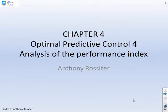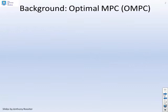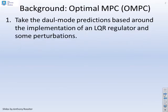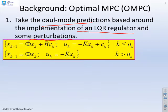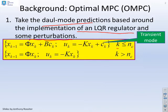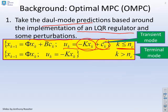This fourth video in the chapter analyzes the OMPC performance index. Background on OMPC: we've shown that if we use dual mode predictions based around the implementation of an LQR regulator with some transient perturbations on the input, we get prediction equations where for the first NC steps there is a transient mode with LQR feedback and a perturbation CK, and after those NC steps you resort back to just the LQR feedback. Choosing K as the LQR regulator is called optimal MPC.